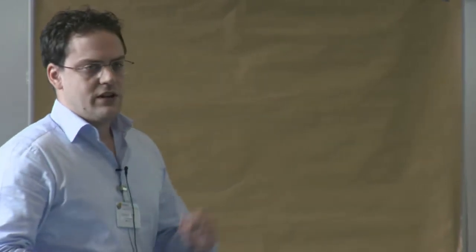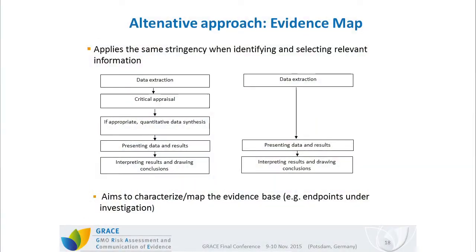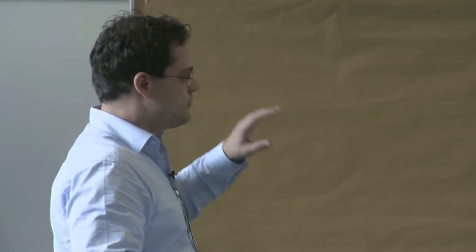Within the project, we did not only apply the systematic review methodology to synthesize primary research data, but also applied an alternative approach called an evidence map. Evidence maps apply the same stringency when identifying and selecting relevant information, but — as shown on the right-hand side — they normally skip the critical appraisal step and also do not provide a quantitative data synthesis. This is because an evidence map aims to characterize or map the evidence base rather than provide a precise answer, making it preferable when you want to know which endpoints are under investigation or where in the world they are being studied.